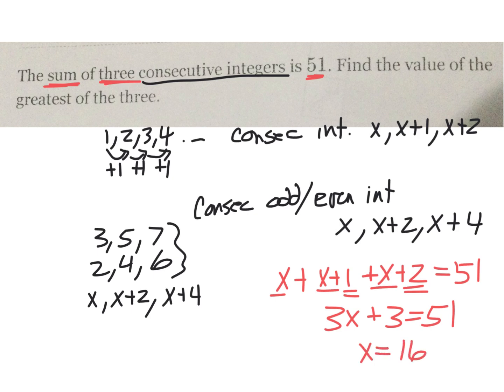The question asks: find the value of the greatest of the three. If X is 16, then the next one would be 17 and the last one 18. So 18 is the biggest. You can double-check: 16 plus 17 is 33, 33 plus 18 is 51.